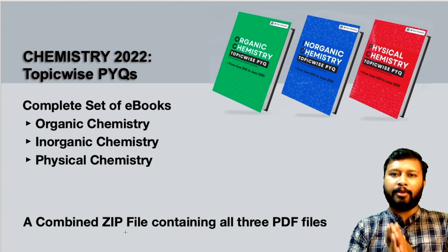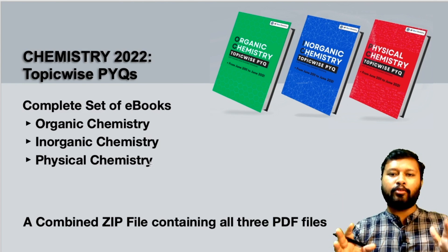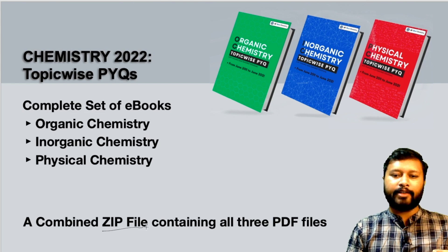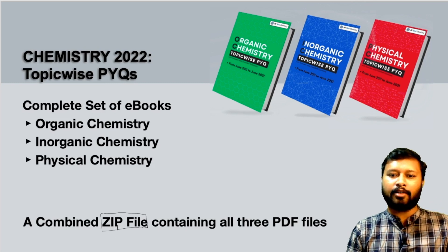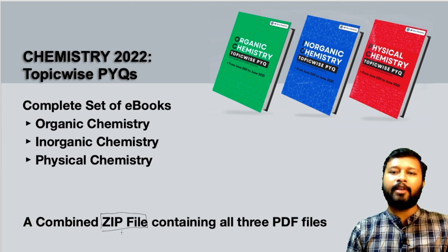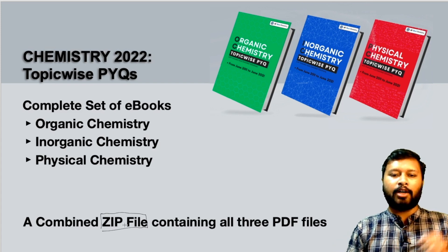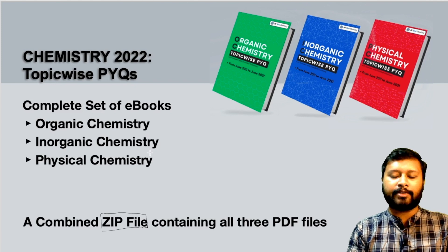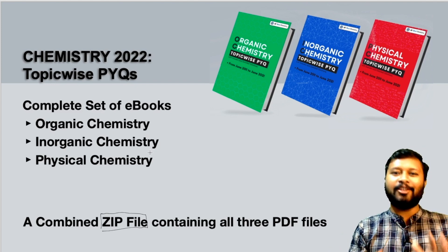The last option is a combined PYQ set in which you get all three ebooks — organic, inorganic, and physical chemistry — together in a single purchase. Once you make this purchase, you will get a ZIP file. This ZIP file can be opened by any unrar or unzip software. Nowadays mobile phones are smart enough that you can just click on the ZIP file, it gets extracted, and you get all three PDF files together.